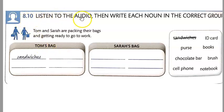8.10. Listen to the audio then write each noun in the correct group. So you have these nouns and they're either going to be in Tom's bag or Sarah's bag. The first one is done for you and Tom's bag has sandwiches. So you're going to write one, two, three more in Tom's bag and you have four more for Sarah's bag.